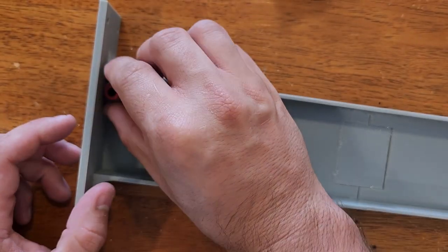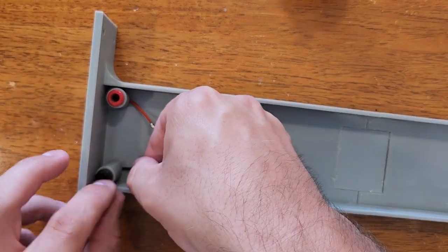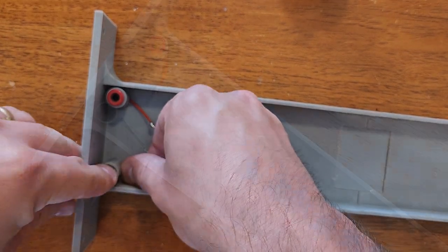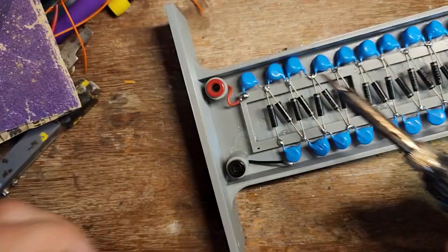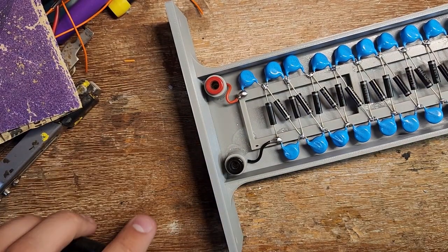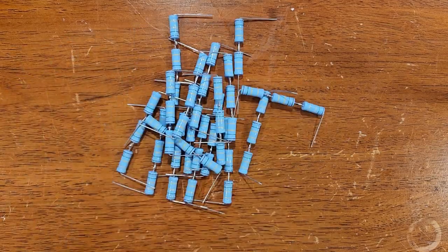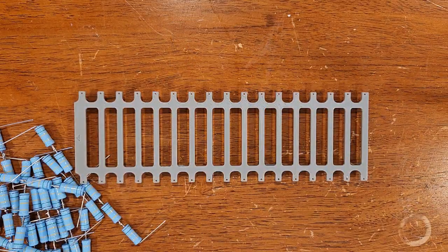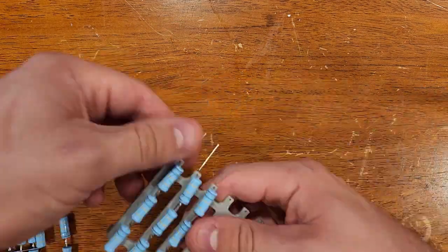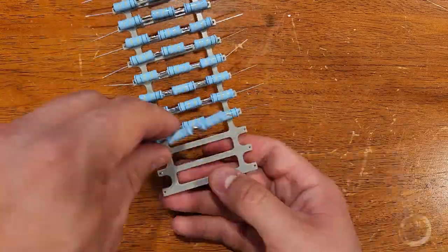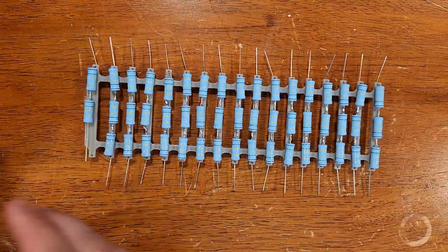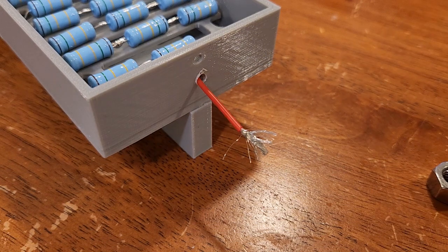Then I attach some jacks that will allow the transformer to be plugged into the multiplier with banana plugs. The multiplier will need some series resistance to avoid over-stressing the diodes. So I'm stringing 50 of these 150 kilo-ohm resistors in series for a total of 7.5 mega-ohms on the output.